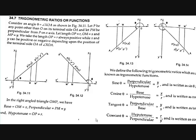Now let's take trigonometric ratios or functions. Consider an angle theta. X, O, A is an angle theta. Let P be a point other than O on its terminal side. Drop a perpendicular from P on the X axis. The length of OP is R, and the length of OM is X.